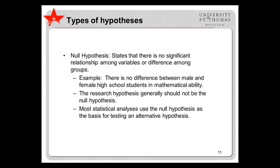The null hypothesis states that there is no significant relationship between variables or a difference among groups. An example would be: there is no difference between male and female high school students in mathematical ability. Note that the research hypothesis generally should not be the null hypothesis. Most statistical analyses use the null hypothesis as the basis for testing an alternative hypothesis, making it difficult to state the null as the research hypothesis. Furthermore, when results are consistent with the null hypothesis, it is unclear whether there truly is no relationship, or whether the study was not conducted well.